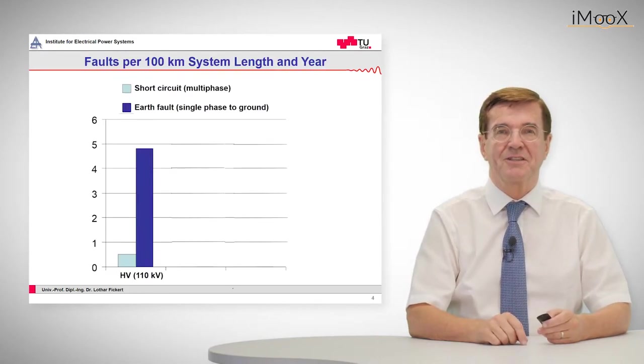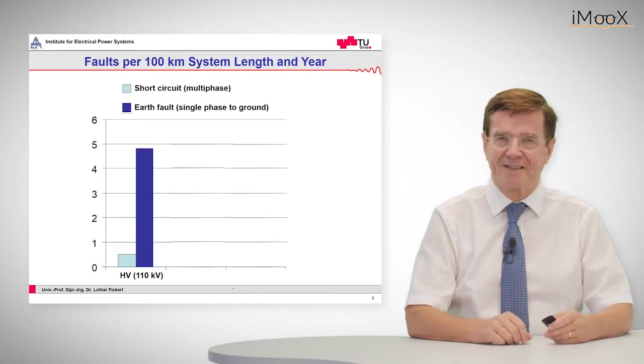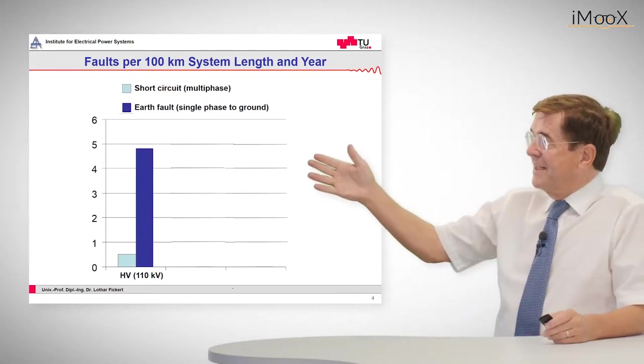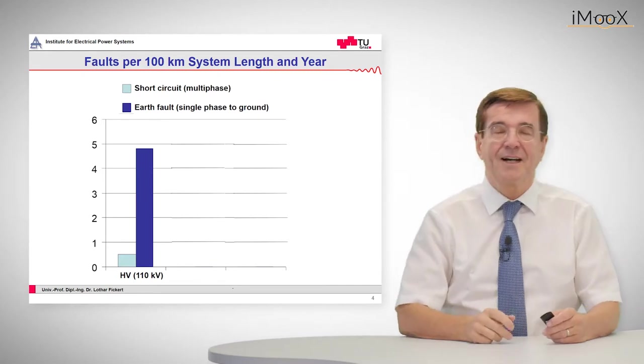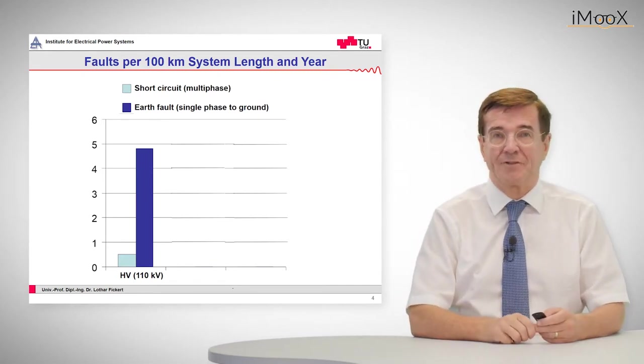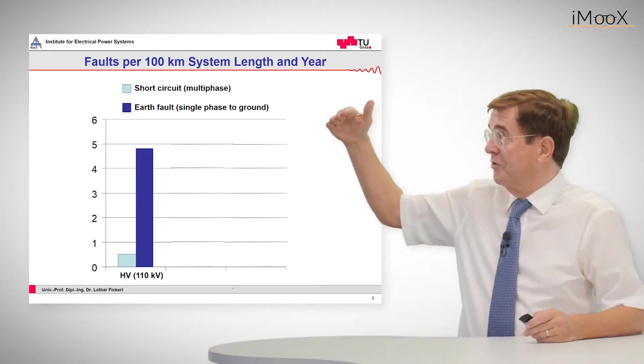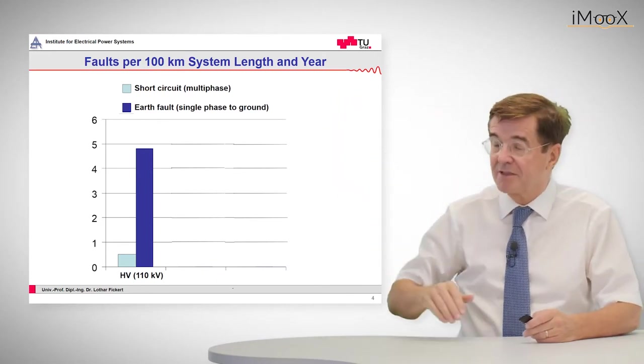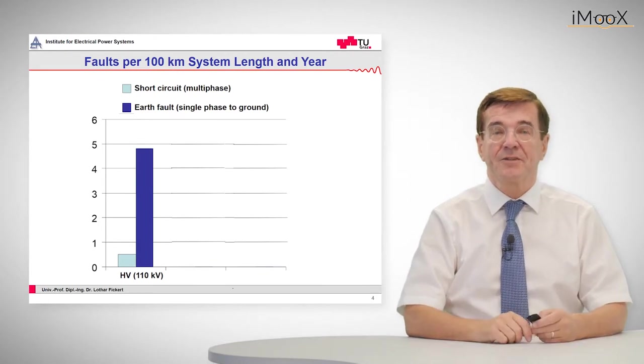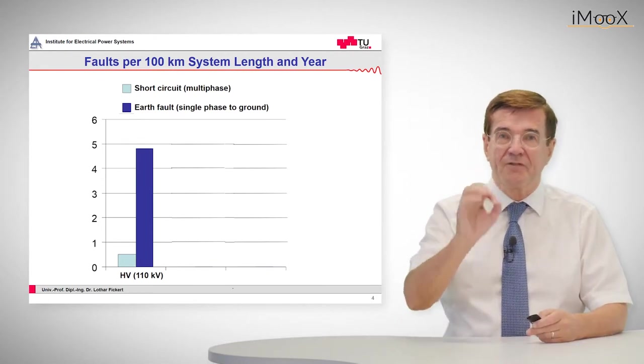Let's start with the neutral point treatment and a bit of statistics. As we can see in high voltage systems, for example 110 kV, there is an enormous proportion of earth faults shown in dark blue versus short circuits. In these grids, earth faults are the faults.